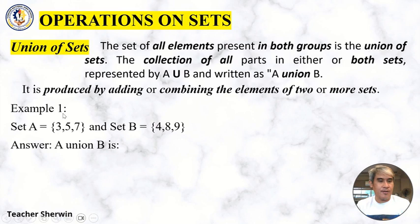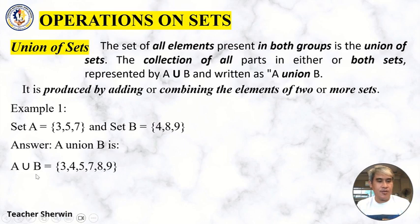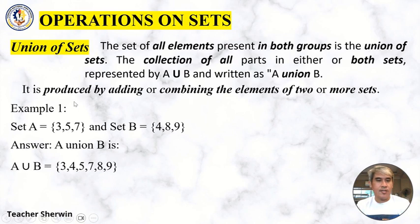Let's have an example. Set A is {3, 5, 7} and Set B is {4, 8, 9}. So what is the answer for the union of Set A and Set B? A union B = {3, 4, 5, 7, 8, 9}. All you need to do is combine the elements of two or more sets. So that is what you call the Union of Sets.